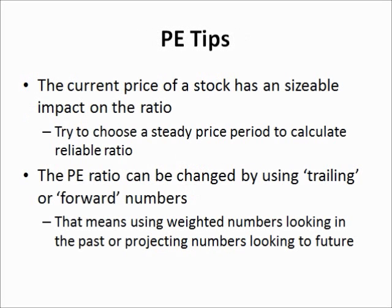Here are a couple of tips to keep in mind when calculating and using a price-to-earnings ratio. First, the current price of the stock has a very sizable and significant impact on the ratio. Don't try to determine the P/E ratio of a stock if it's trading very radically up or down — try to choose a period when it's more stable. That way you can have a more reliable ratio, something more long-term, consistent, and smoothed out, making it much more easily compared to an industry standard.